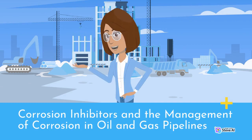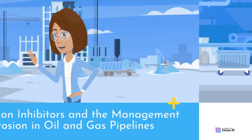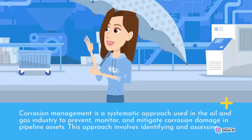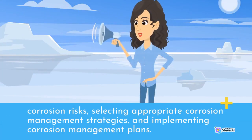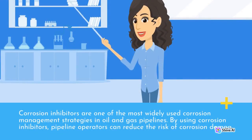Corrosion management is a systematic approach used in the oil and gas industry to prevent, monitor, and mitigate corrosion damage in pipeline assets. This approach involves identifying and assessing corrosion risks, selecting appropriate corrosion management strategies, and implementing corrosion management plans. Corrosion inhibitors are one of the most widely used corrosion management strategies.